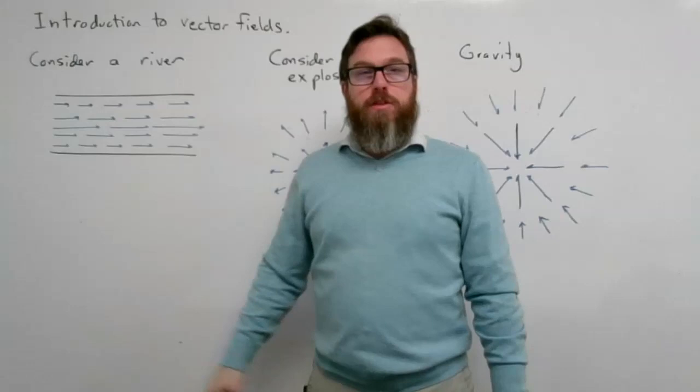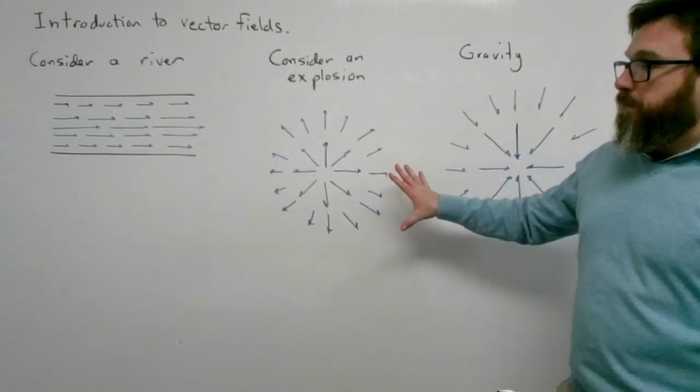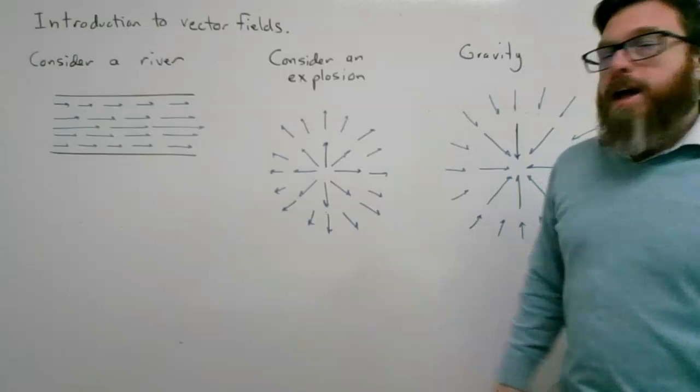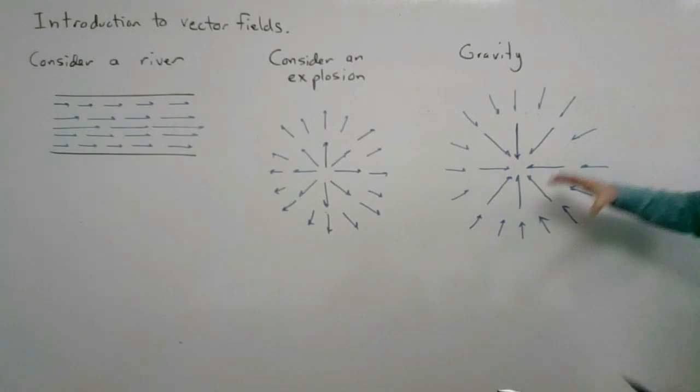If you look at an explosion, in the beginning there's a lot of energy, so it might move quicker outward closer to the center, and it dissipates as you go further out. The reverse idea is gravity — near the object there's more gravity than further away, so the vectors are longer close in and shorter farther out.